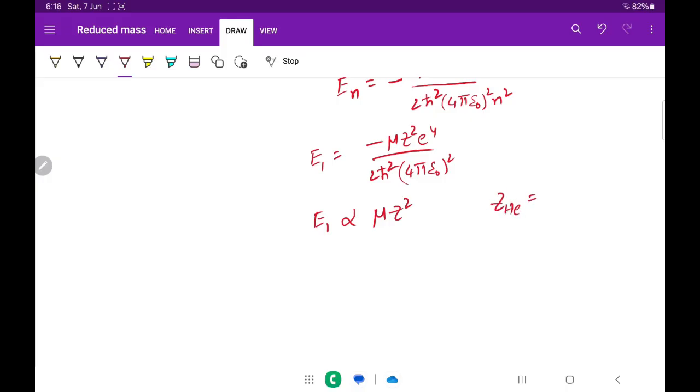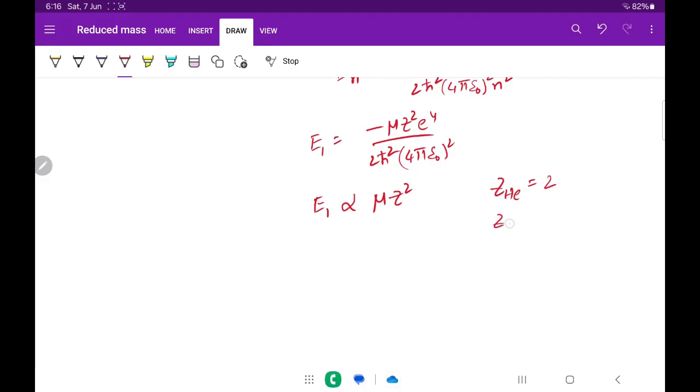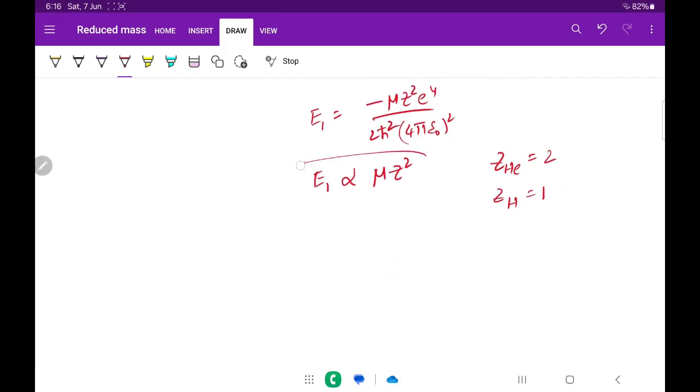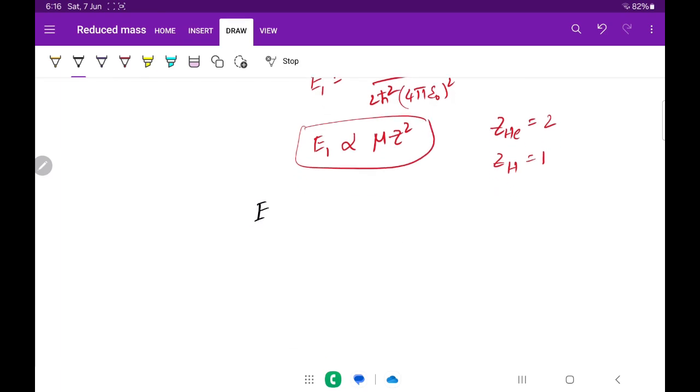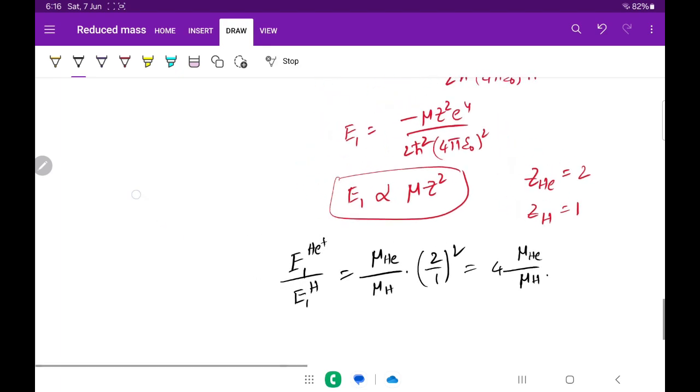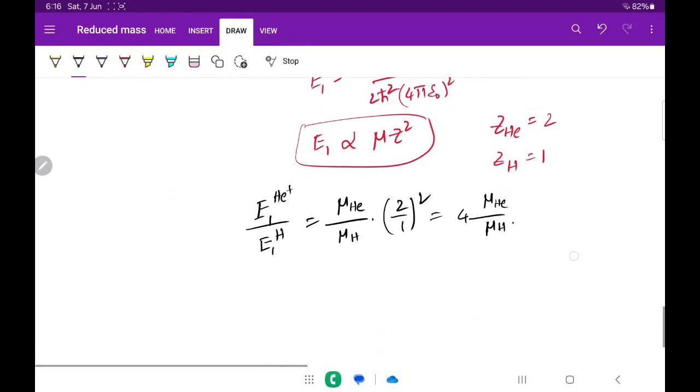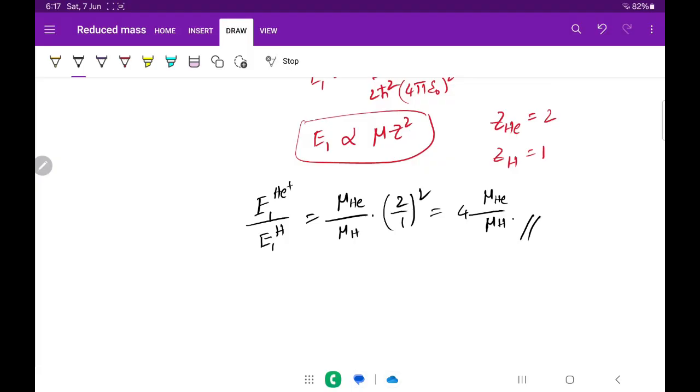Here we have two masses. One is helium, whose atomic number is 2, and the other is hydrogen, atomic number 1. If you substitute these two values, you will get E1 helium plus divided by E1 hydrogen equals mu helium by mu hydrogen times 2 by 1 whole squared. You will get 4 times mu helium by mu hydrogen. That's it. It resembles option C. The ratio is 4 mu helium by mu hydrogen.